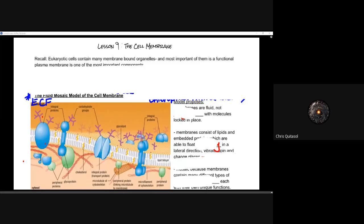We'll have two final culminating assignments. And don't worry, if it says that it's missing, it just means that you submitted it through the Google Form. You should still have a mark if you submitted the Google Form, but you had to actually submit it in order for it to show up. OK, so let's start with lesson nine, the cell membrane.